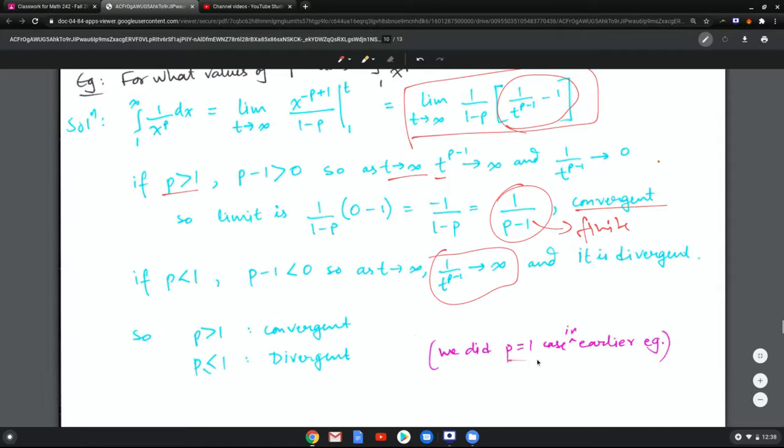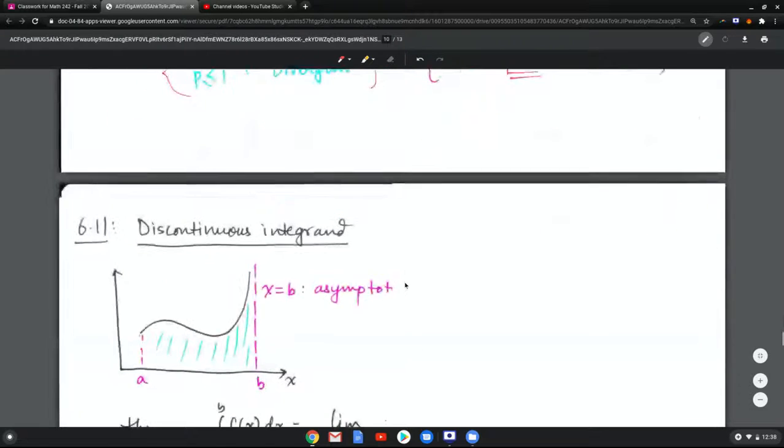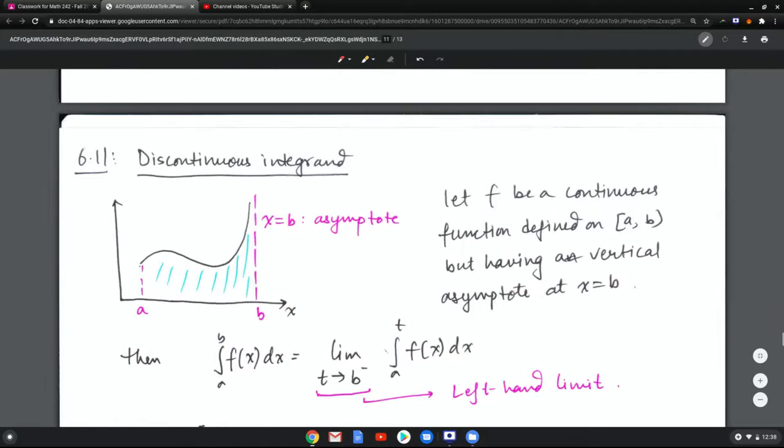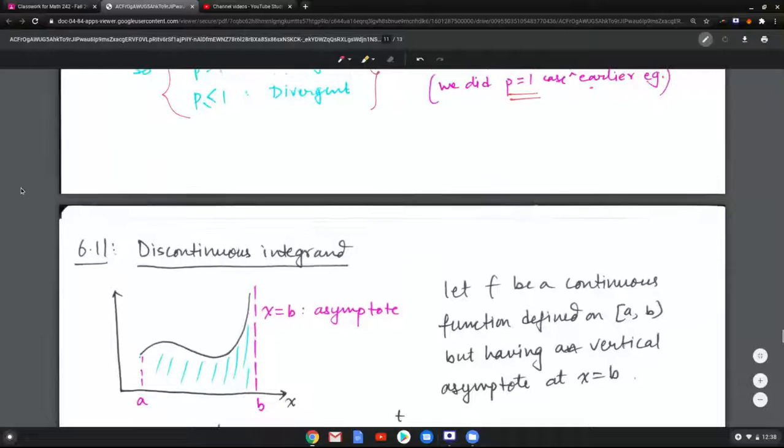But we already found that p equals 1 case is divergent. So in general, if p is more than 1 it is convergent, and if p is less than or equal to 1 it is divergent. Okay, we do the second case in the next video.